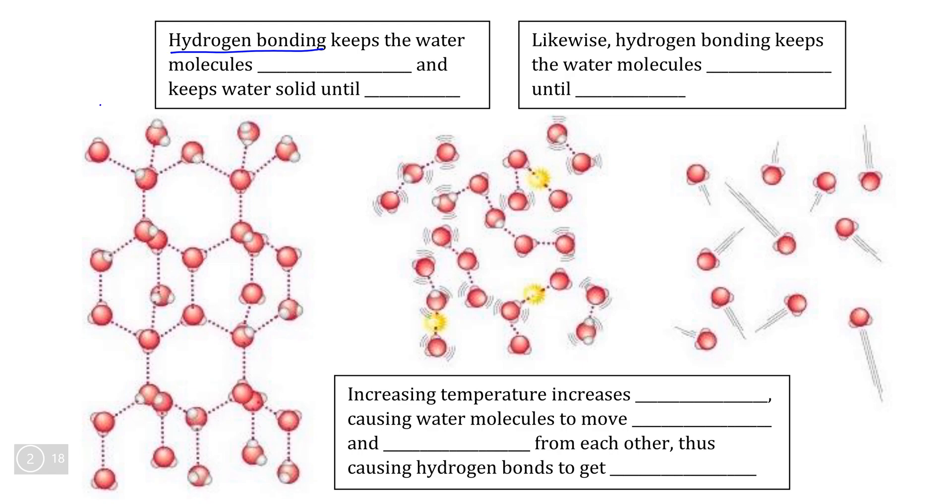So if we take a look at ice, for example, hydrogen bonding keeps water molecules close together to each other. So we can see the hydrogen bonds form between these water molecules in ice, and it's the hydrogen bonding that prevents water from melting until the temperature exceeds zero degrees Celsius. This is the temperature at which ice melts.